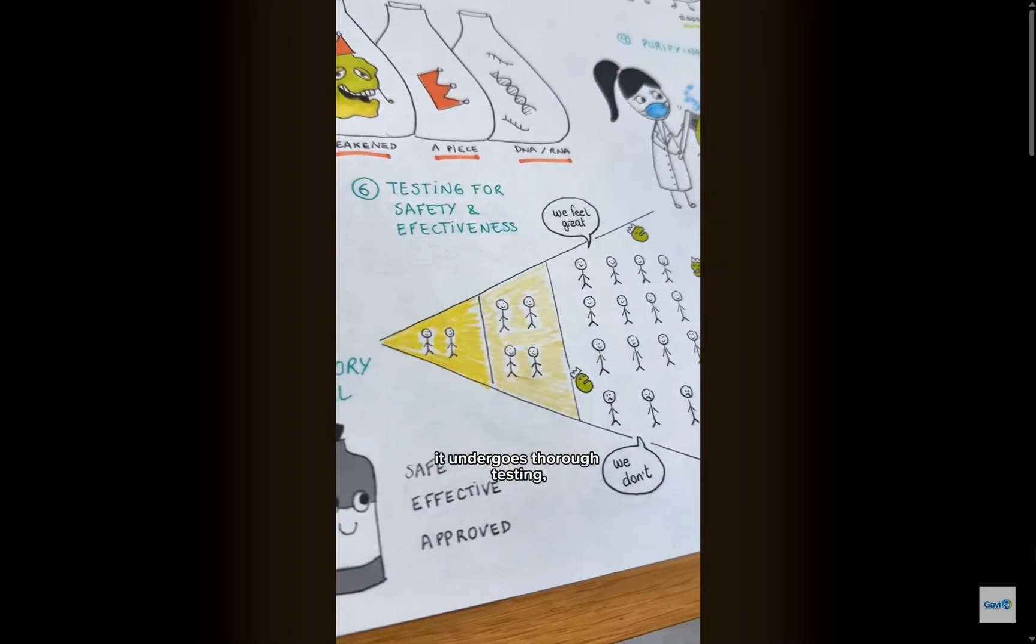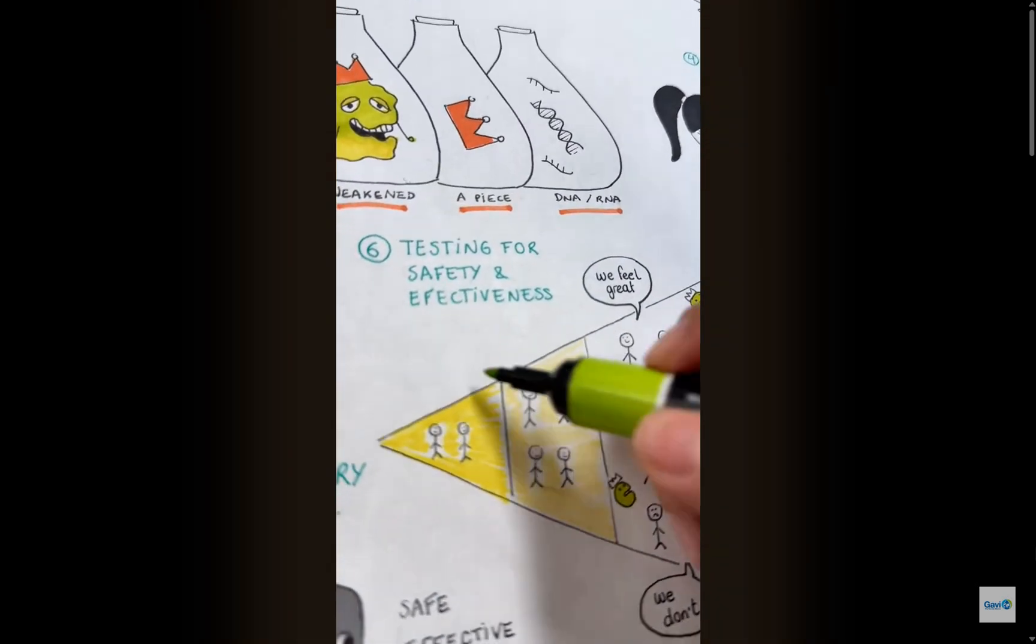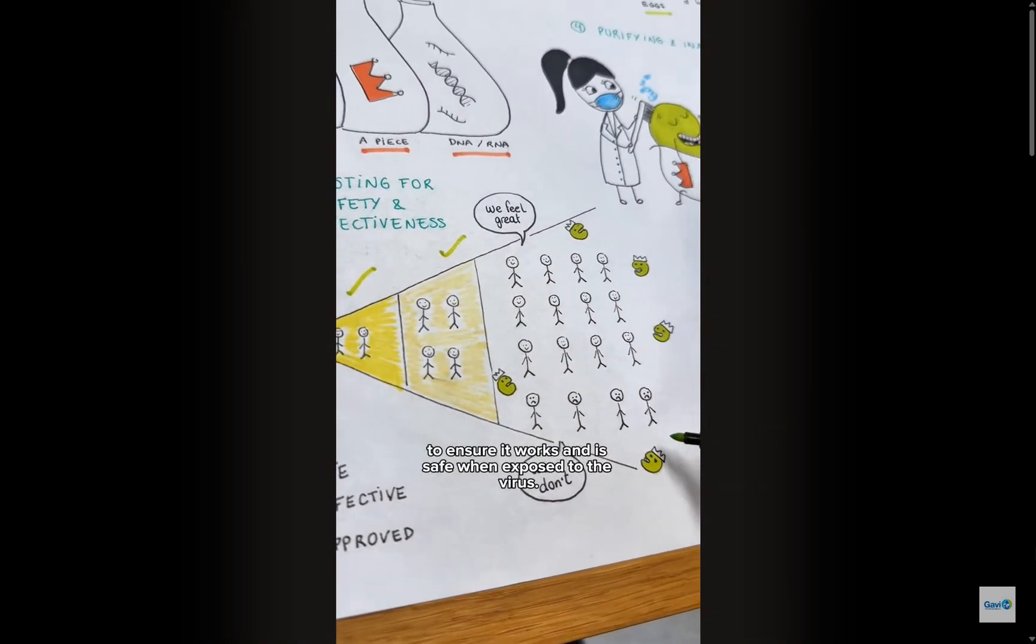Before a vaccine is approved, it undergoes thorough testing, first in labs, then in clinical trials. It's tested on a few healthy volunteers, then larger groups, to ensure it works and is safe when exposed to the virus.